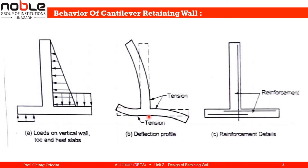As we can see in the figure, in the stem the tension is on the earth-retaining face and compression is on the other side. In the heel slab, tension is on the upper side and compression is on the lower side. We provide reinforcement where there is tension, so in the stem the reinforcement is provided on the face towards the retained earth.